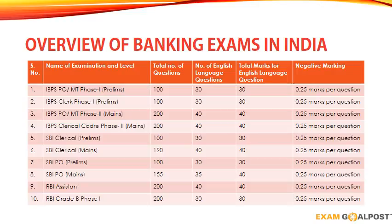Let us discuss the pattern of the English language section of different banking exams. In IBPS PO prelims and IBPS Clerk prelims, 30 questions of total 30 marks are asked. In IBPS PO mains and IBPS Clerk mains, 40 questions of total 40 marks are asked. Similarly, in SBI Clerk prelims and mains, 30 and 40 questions are asked respectively.